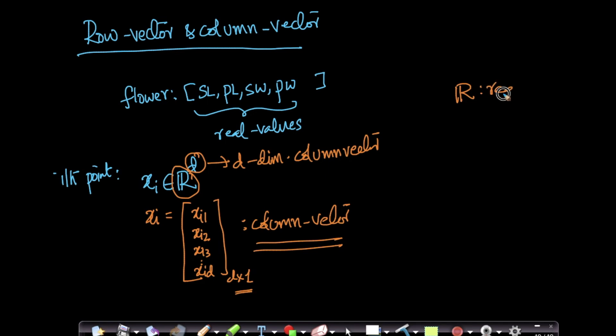So whenever I say xi belongs to R^d, it means xi is a d-dimensional vector of real values. Here, each of these xi1, xi2, these are all components of this vector.